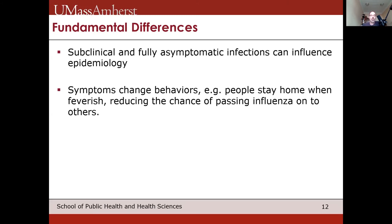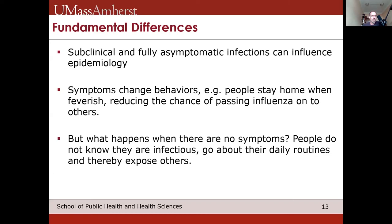Symptoms themselves can change behaviors — people stay home when feverish, reducing chances of passing on influenza. With HIV, a person with symptomatic HIV is less likely to engage in behaviors that would transmit it, which changes the transmission dynamics. When people have no symptoms, they don't know they're infectious and go about their daily routines, exposing others. With COVID-19, asymptomatic cases have the potential to be transmitting the whole time, and without presumptively isolating upon potential exposure, we risk passing it on and furthering transmission.